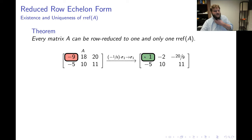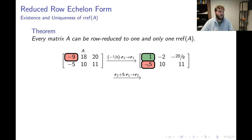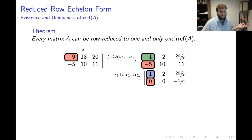Even though I've made my matrix closer to reduced row echelon form, it still isn't there. Below my first pivot I have a non-zero number — a negative 5 in the (2,1) position. I can get rid of it by doing an elementary row operation: adding 5 times row 1 to row 2. When I do this, I end up clearing out that negative 5, so it becomes 0. My first column is now a legitimate pivot column with a 1 as the pivot and 0s everywhere else.